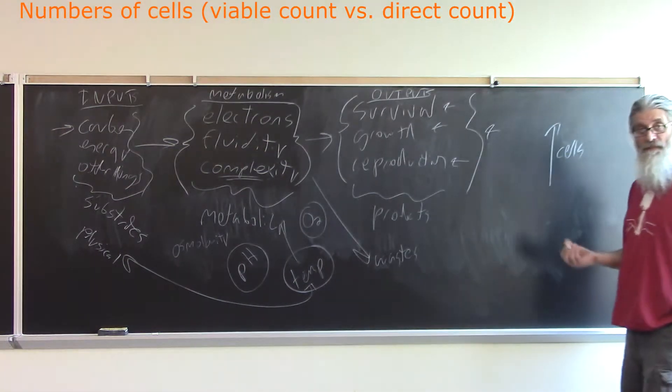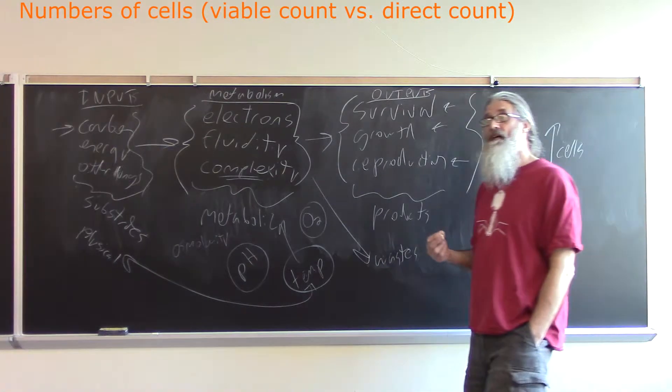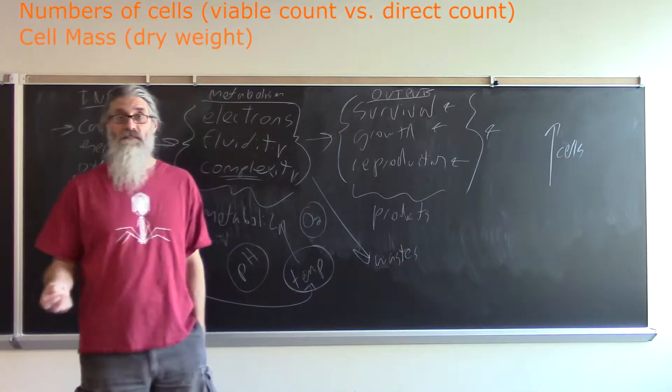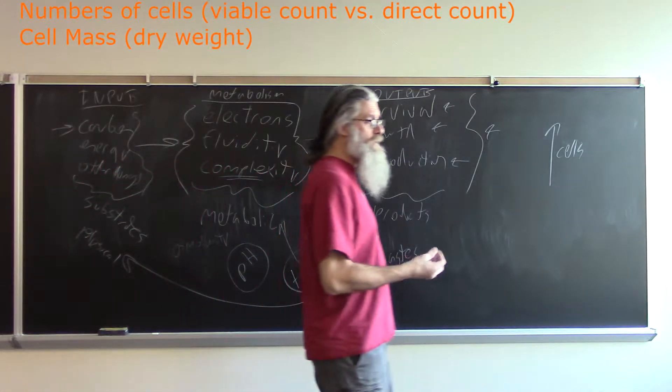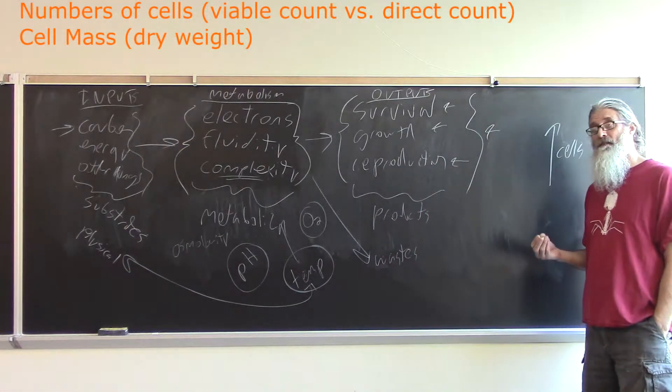A direct count is just the number of cells whether they're living or dead. We can also take advantage of the fact that two cells weigh more than one cell, and therefore we can measure the increase in the amount of cells.